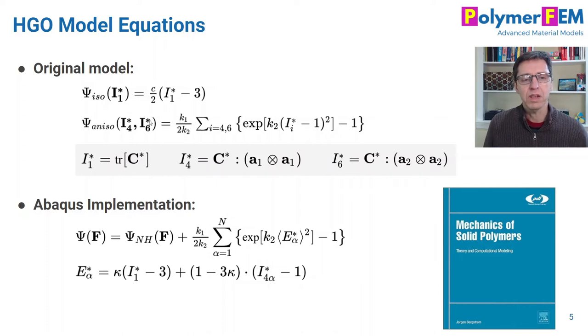And then there's an anisotropic contribution as well from the collagen fibers. You'll see that there are two families of them specified by the invariants I4 and I6. So I4 is really the stretch of fiber family one, and I6 is the stretching component of fiber family two.